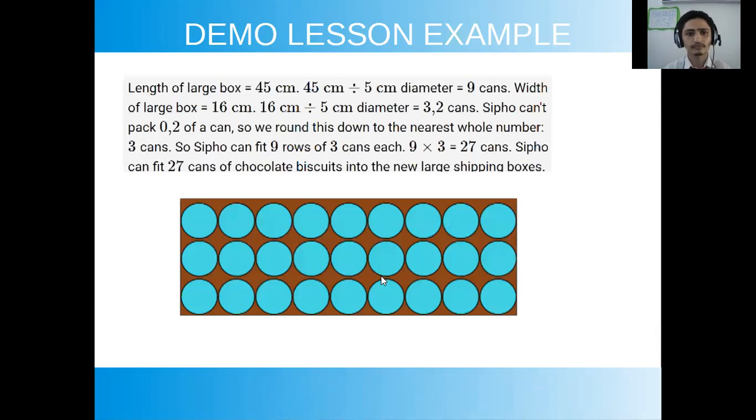So if you look at the answer, what I said was we need to look at the lengths. Always, it's important that you look at the lengths, the widths. Okay, in this question they don't want you to consider the height, but if they want you to consider the height as well they will give you a measurement for the height and you need to divide that as well. So length of large box is 45 centimeters. So because the diameter of the can is 5 centimeters, you divide that and then you will get 9 cans that fit horizontally.